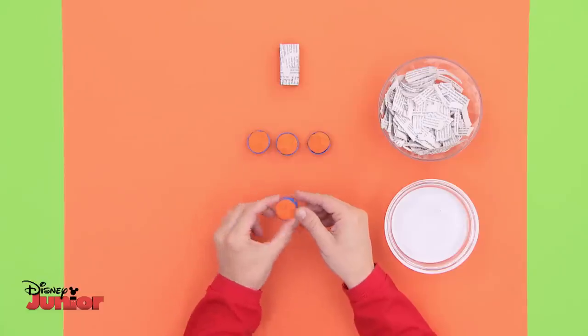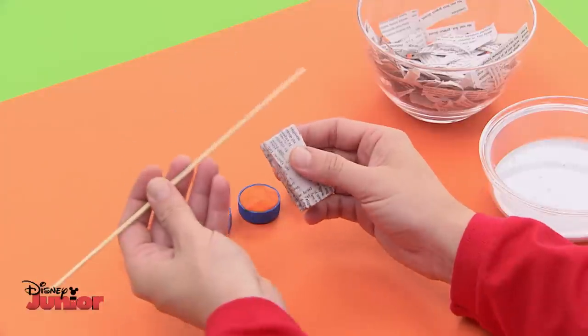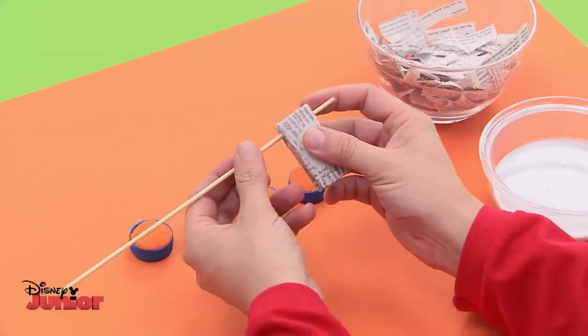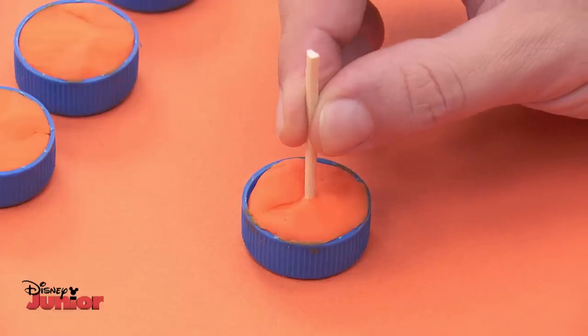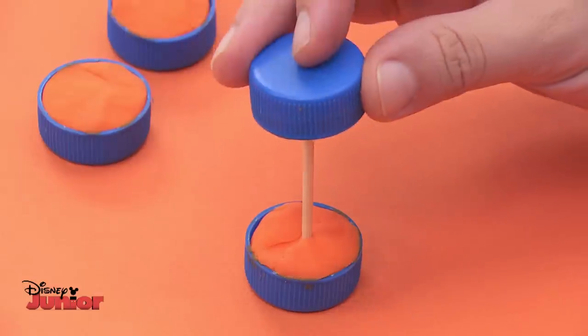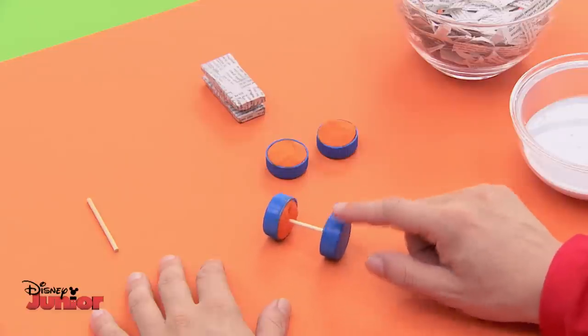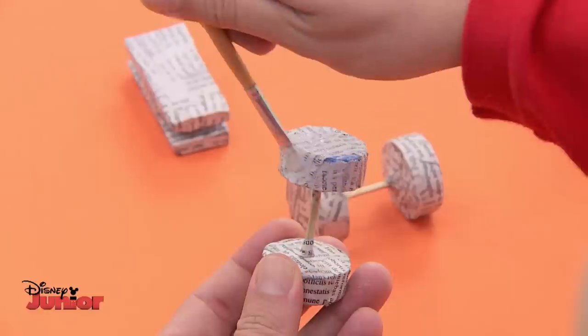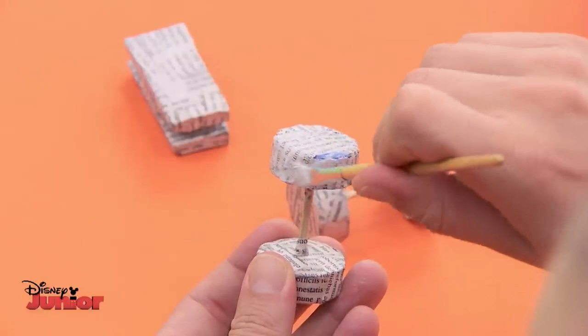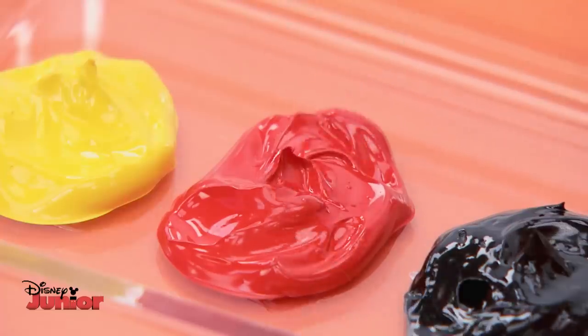Now grab some modeling clay and fill four plastic tops to make the wheels. To join them, ask an adult to cut a wooden skewer to size. It should be wider than your car. Put one stick in the center of one wheel and another on the opposite end. Apply newspaper and Art Attack paste to the wheels, but not to the sticks.